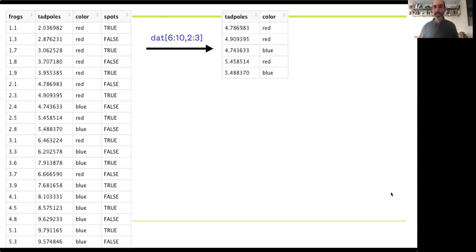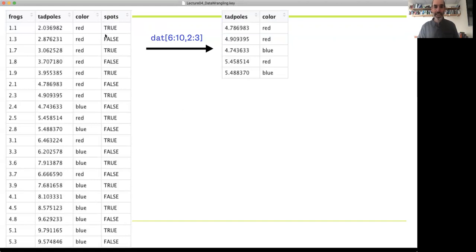So for example, if I just wanted to look at rows six through ten and columns two and three, I could access that by saying, instead of looking up just a single number, I can look up a whole series of rows, a whole series of columns, and then just get that subset of data.